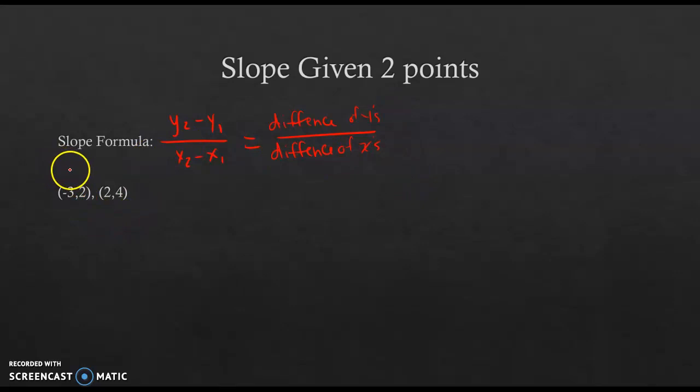Keep in mind our points are always x comma y. So I'm going to pull my 4 from my y's. Y's are on top: 4 minus 2, so y minus y. And then because I pulled from the 4 first, I'm going to pull the x value from that point first. So I'm going to do 2 minus negative 3. Notice I still have (2,4) and (-3,2).